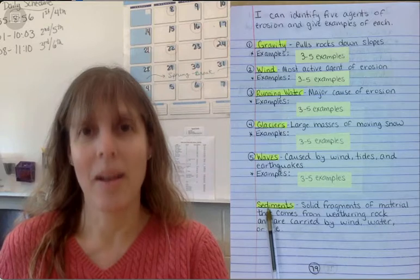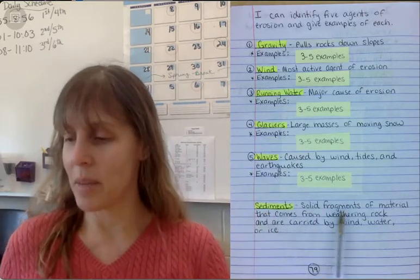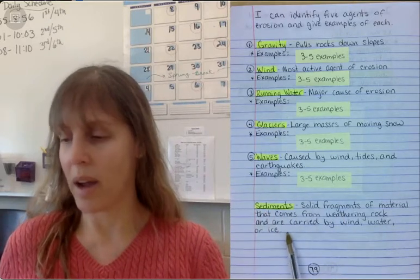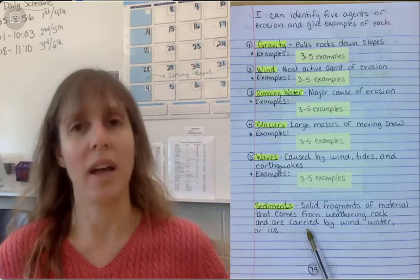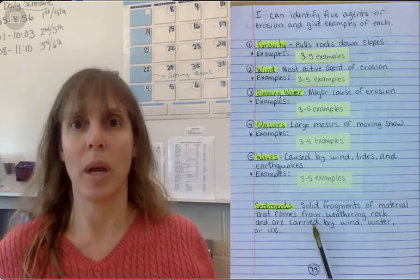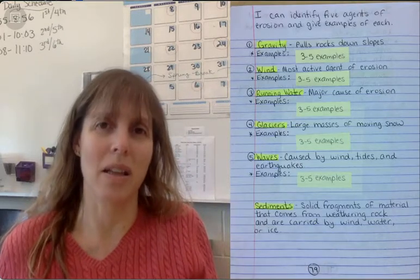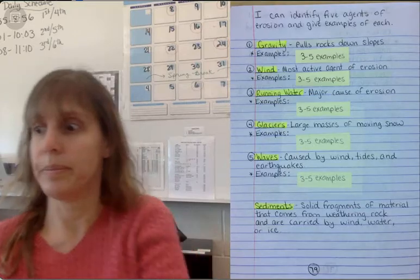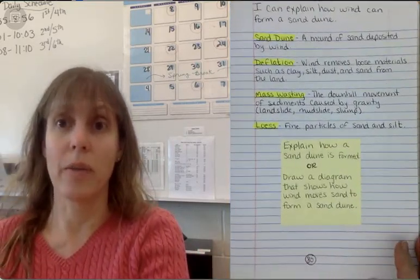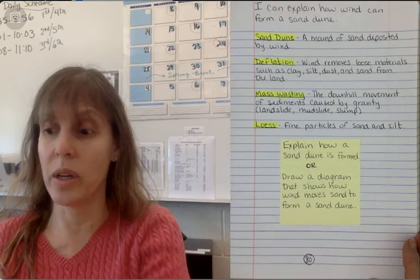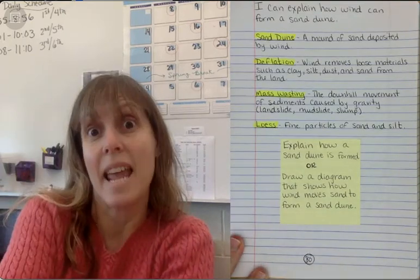Say it with me: sediments. Sediments are solid fragments of material that come from weathering rock and are carried by wind and water and ice. Kind of like, you get a big rock and then a small rock and then a smaller rock. Well, how did the rock even get that size? Well, rocks actually get around. The longer they're around, rocks get smaller and they can get really, really small like sand small.